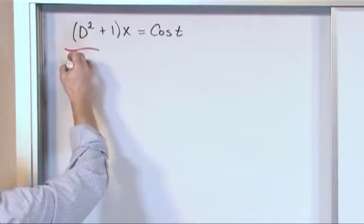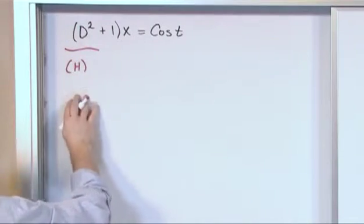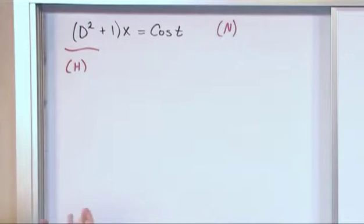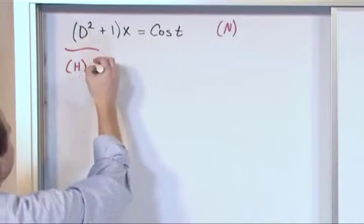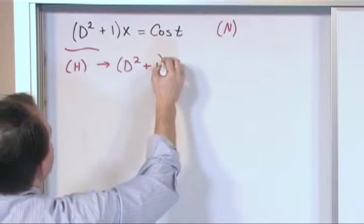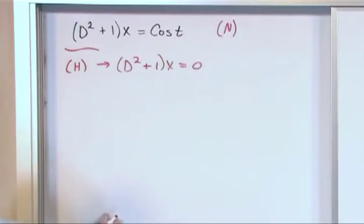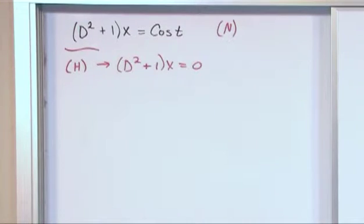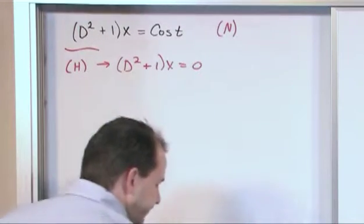The first thing we want to do is define the homogeneous version because after all this equation is a non-homogeneous version. So what we're going to do is solve first D² + 1 operating on x(t) equals zero. So we just set the right hand side equal to zero, take out the forcing function and see how the system behaves.